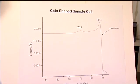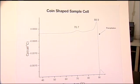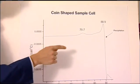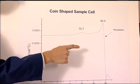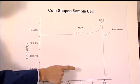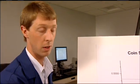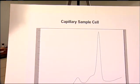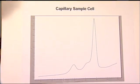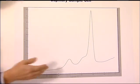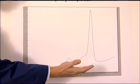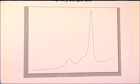Here we take a protein and run it in a coin-shaped cell. We see two unfolding events, but the problem is the second unfolding event is immediately followed by precipitation, making data analysis impossible. We take this same sample, run it in a capillary cell, and we clearly see two unfolding events with a nearly perfect baseline before and after the transition, making data analysis possible.